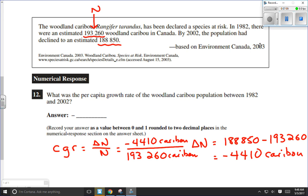Another thing that we can point out here is that if we've got caribou over caribou, that will cancel, just like x over x would cancel in a math problem. Caribou over caribou will cancel, which makes this a unitless number. That means there will be no unit when we're done our calculation. The units cancel. So all I have to do now is enter in my calculator. Negative 4,410 divided by 193,260. And the answer is negative 0.022819003.